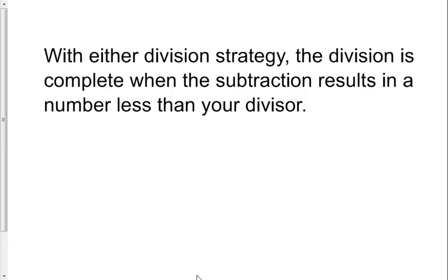So we had two strategies for dividing. We can do the repeated subtraction, the partial quotient—that was the first strategy—and the second was the more traditional divide, multiply, subtract, bring down. With either strategy, your division is complete when you subtract and you get a remainder, a number less than your divisor. So spend some time practicing, and show me how well you can divide with accuracy.